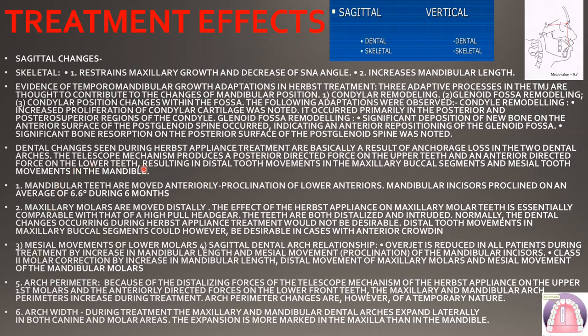Now, what are the dental changes? The dental changes seen during Herbst appliance treatment are basically a result of the anchorage forces in the two dental arches. The telescopic mechanism leads to mandibular anterior positioning. There is a posterior-directed force on the upper teeth and an anterior-directed force on the lower teeth. The upper teeth are forced to move posteriorly, and the lower teeth are forced to move anteriorly — resulting in distal tooth movement in the maxillary buccal segment and mesial tooth movement in the mandible.